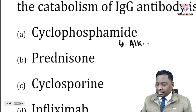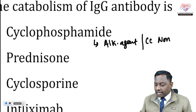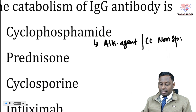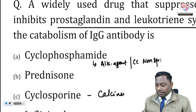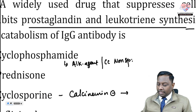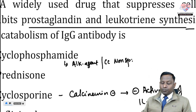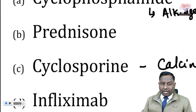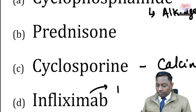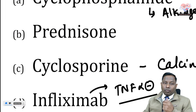Cyclophosphamide is an alkylating agent — a cell cycle non-specific anti-cancer drug. Prednisolone is a steroid. Cyclosporine is a calcineurin inhibitor; it inhibits the activation of interleukin-2. Cyclosporine and tacrolimus are your calcineurin inhibitors. Infliximab is a TNF-alpha inhibitor. So we can rule out these other options.